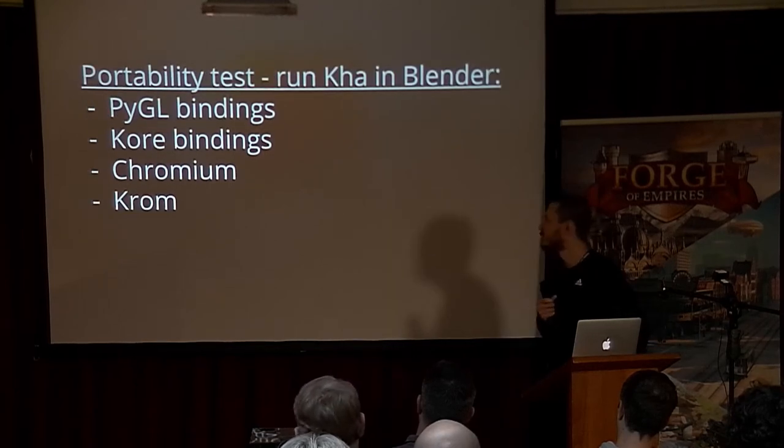The first problem was how to run Haxe and Kha inside Blender. Blender has OpenGL bindings exposed through Python, so my first idea was to create a Kha backend, compile Kha to Python, and call those Python bindings — which actually worked, but it was quite slow. Another approach was to embed Kore, the C++ implementation of Kha, into Blender, compile it together, then create Python bindings to Kore and compile Kha to Python — it worked, but was tough to maintain since you'd have to update all bindings whenever Kha updated.